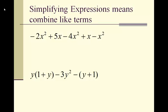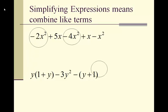When you are simplifying an expression, what this means is that you are trying to combine like terms together. Looking at this first problem, we have anything that has an x squared will be a like term. We have negative 2x squared, negative 4x squared, and negative x squared — they are all like terms, we can combine them together. Also we have 5x and regular x; they are like terms and they can combine together.